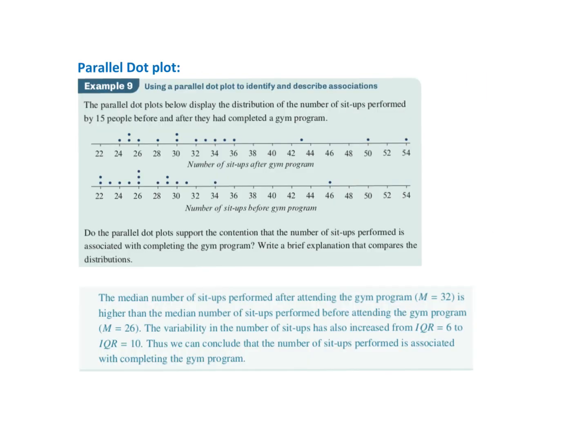In this example, we've got a parallel dot plot to display the distribution of the numbers of sit-ups performed by 15 people before and after they completed a gym program. Support the contention that the number of sit-ups performed is associated with completing the gym. You're going to compare either a median, the IQR, you really only have to compare one of those things.